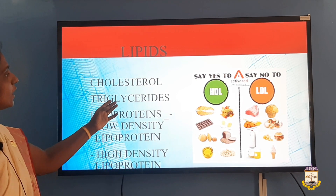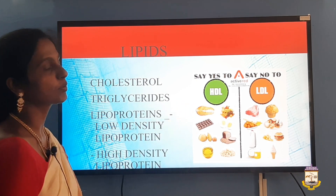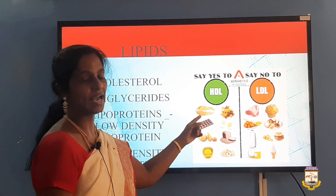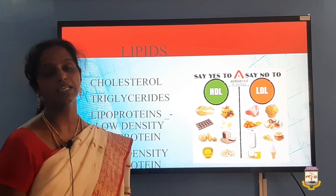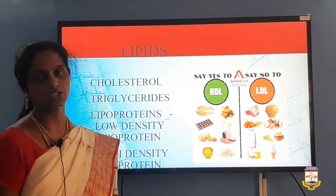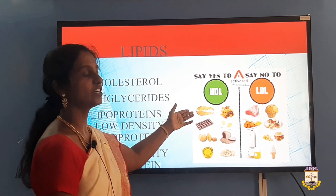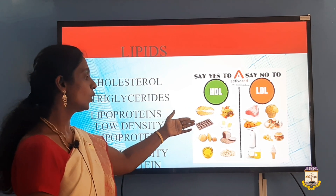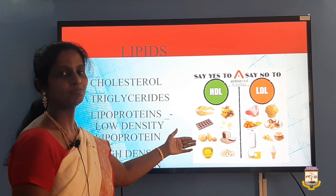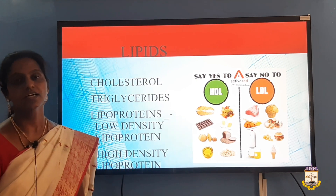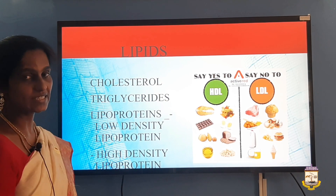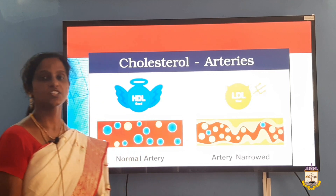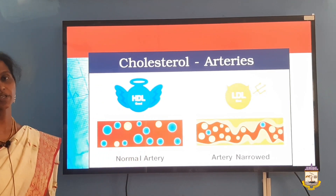Looking at lipoproteins: HDL, the high-density lipoprotein, is considered good cholesterol, whereas LDL, the low-density lipoprotein, is called bad cholesterol. Good cholesterol is found in fish, fruits and vegetables, whole grains, eggs, oils, and nuts. LDL is present in baked items, processed foods, and fried foods.